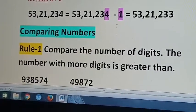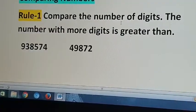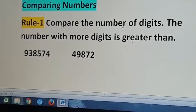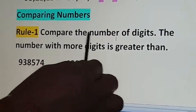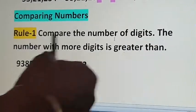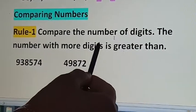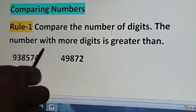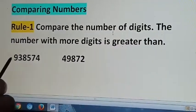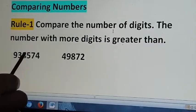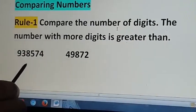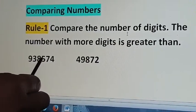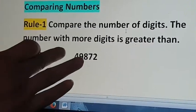Now comparing numbers. There are different rules to compare numbers. First, compare the number of digits — the number with more digits is greater. Look at this number: count the digits — there are 6 digits here and 5 digits in the other number. So the 6-digit number is greater. Simple.